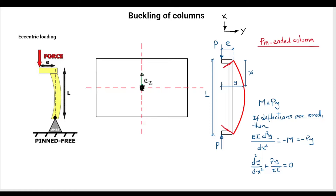In this video, we talk about what happens when we have a column and instead of having a completely centered load along the longitudinal axis of the column, we have a certain eccentricity. So, in this case as presented, if you have a pin-free column and the force is not aligned with the center of the column but is a distance away from it, then you might call it an eccentric loading.